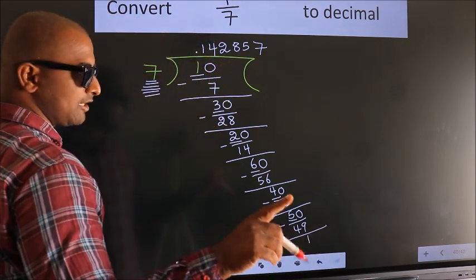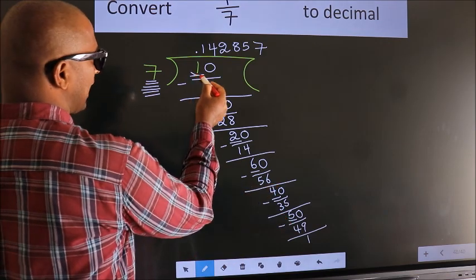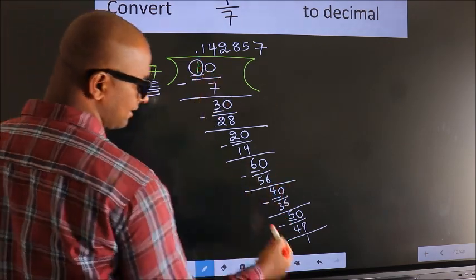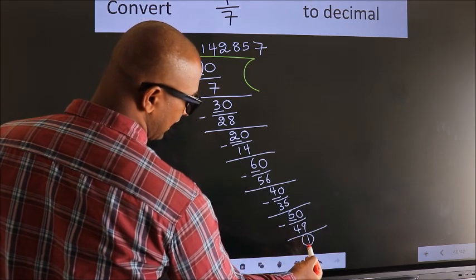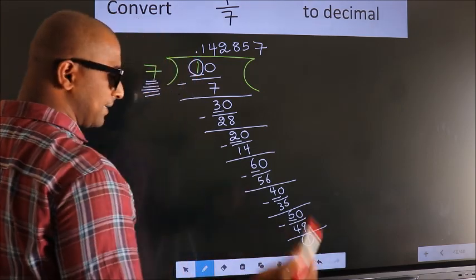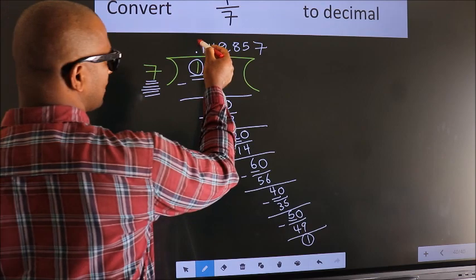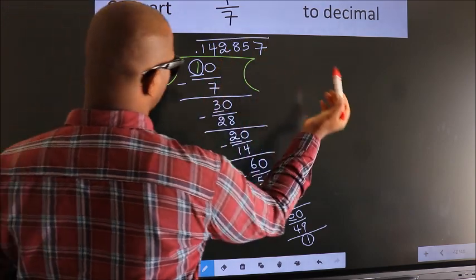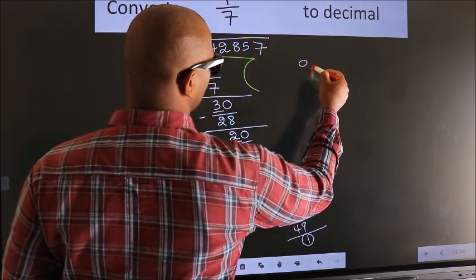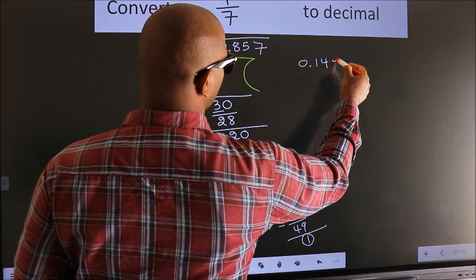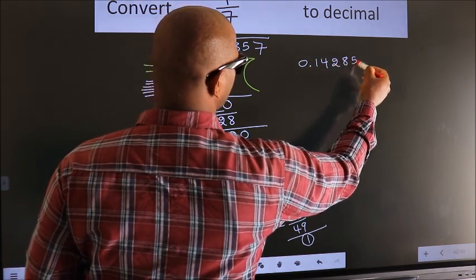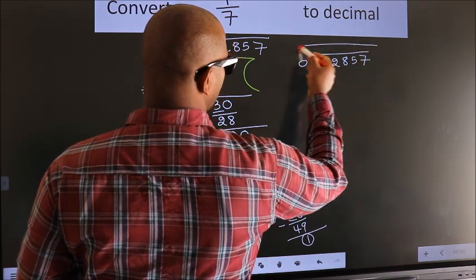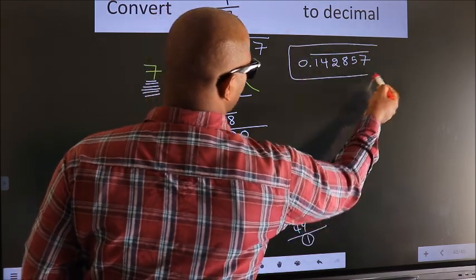Now, here you observe. We had 1 here, and we got 1 again. That means we get a bar on these numbers. Therefore, our answer is 0.142857 with a bar on these numbers. This is our answer.